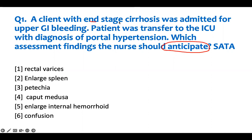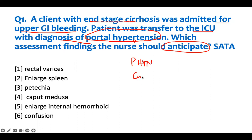A client with end-stage cirrhosis was admitted with an upper GI bleed. The patient was transferred to the ICU with a diagnosis of portal hypertension. Which assessment finding should the nurse anticipate? It's the same structure as the previous question, but the focus should be on portal hypertension. I know the patient has cirrhosis, but the question is asking: if the patient is being admitted for portal hypertension because they are bleeding, what are the symptoms consistent with portal hypertension?